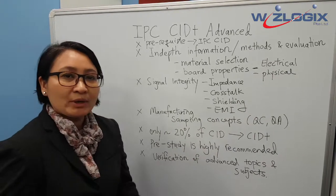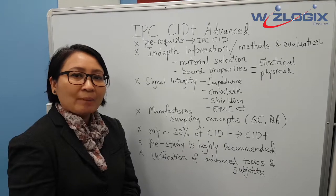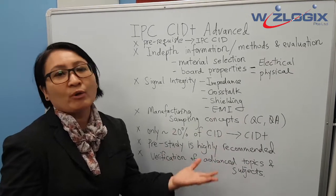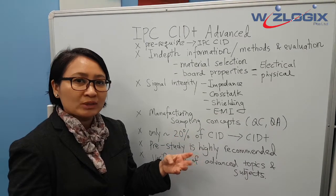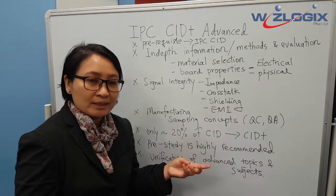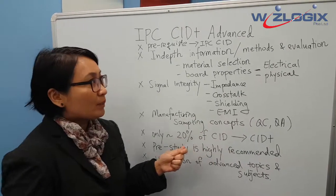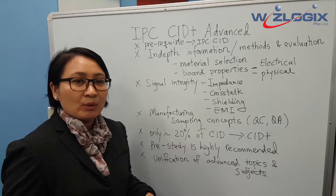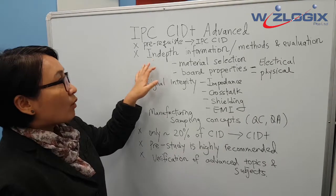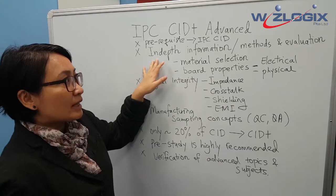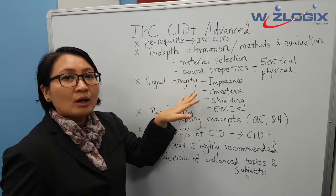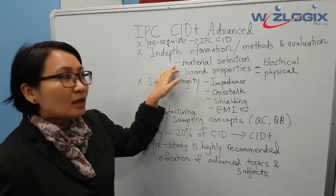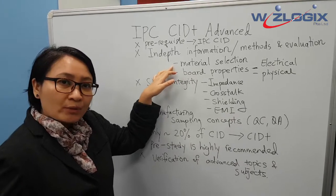When you attend CID, they give you straightforward information but don't really tell you how to select or evaluate things like material properties or methods. In the CID Plus, we provide more in-depth information — we explain how you can evaluate materials and what methods you can use to choose your laminates.